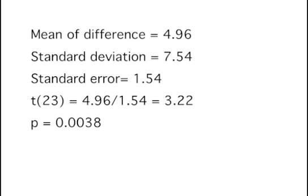The t-value is 3.22, and p is equal to 0.0038, so the mean difference score is significantly greater than 0. Therefore, the difference between the D60 and D0 conditions is significant.